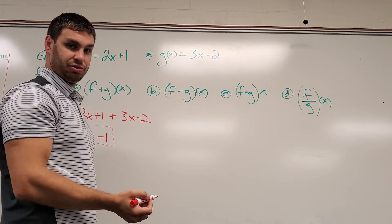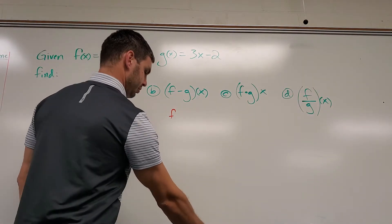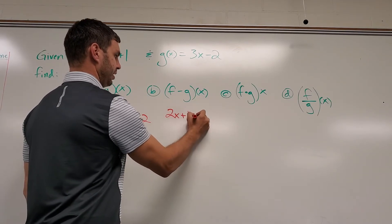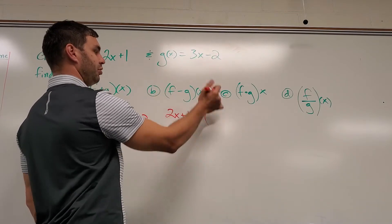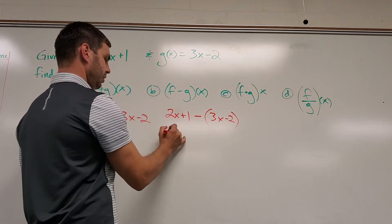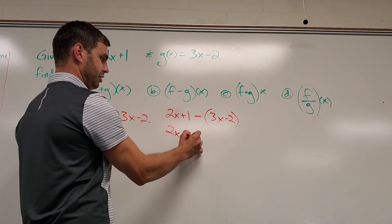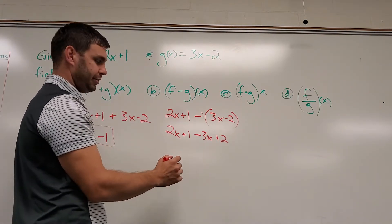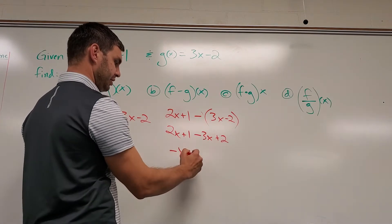f minus g of x would be f of x, which is 2x plus 1, minus, and I'm going to put this in parentheses because we need to subtract the whole thing. It's going to be 3x minus 2. If I distribute that negative or negative 1 in, that's going to be 2x plus 1 minus 3x plus 2. Now I can combine my like terms. 2x minus 3x is negative x. 1 plus 2 is 3.